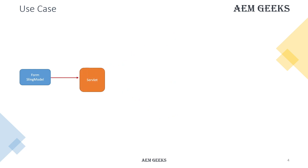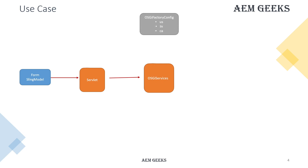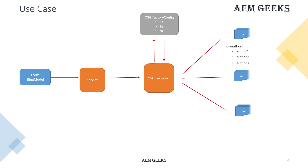In detail, we will have a form. We will use a resource type servlet as an action for this form. When we submit that form, inside the servlet we will call the OSGI service. Then we will have another service which actually will be calling the factory configuration. This service will be used to get the factory configuration. Once we have all the required information from this factory OSGI configuration, we will save that data under a country-specific site. We will create one node per submission.